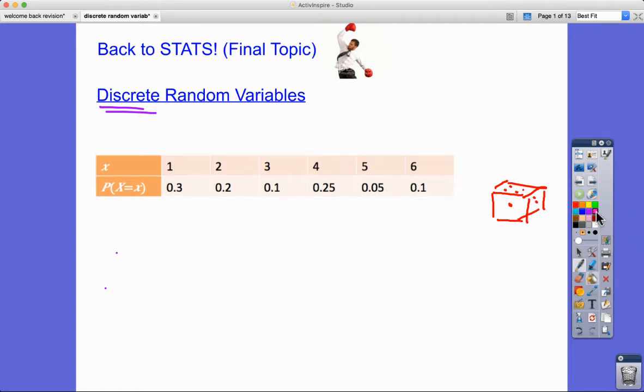Quite crucially as well, all of these probabilities should add up to 1, and they do. So this is just a nice example of how discrete random variables and their related probabilities can be presented.